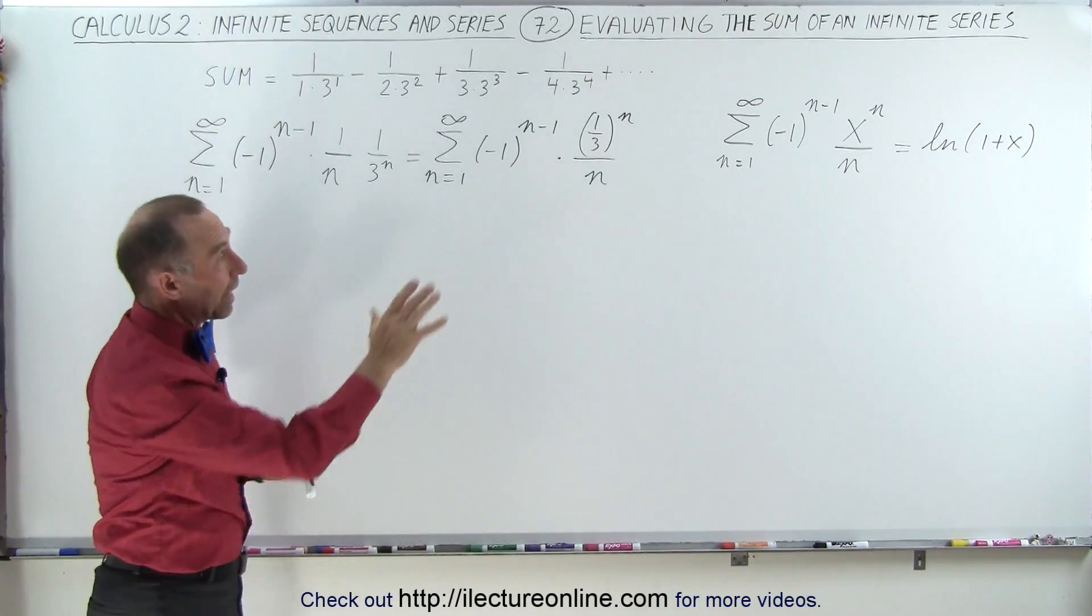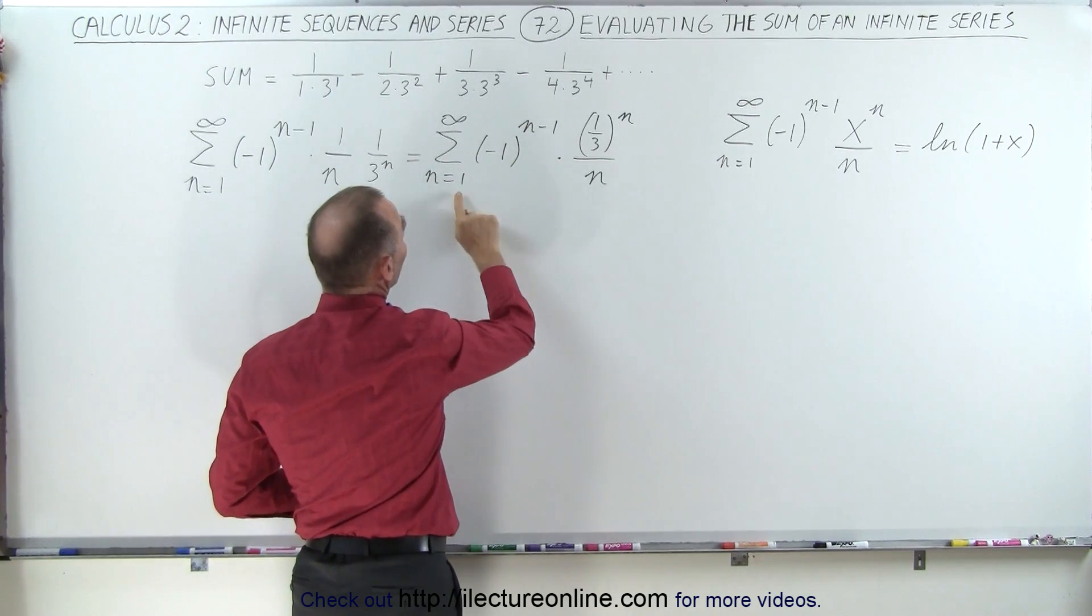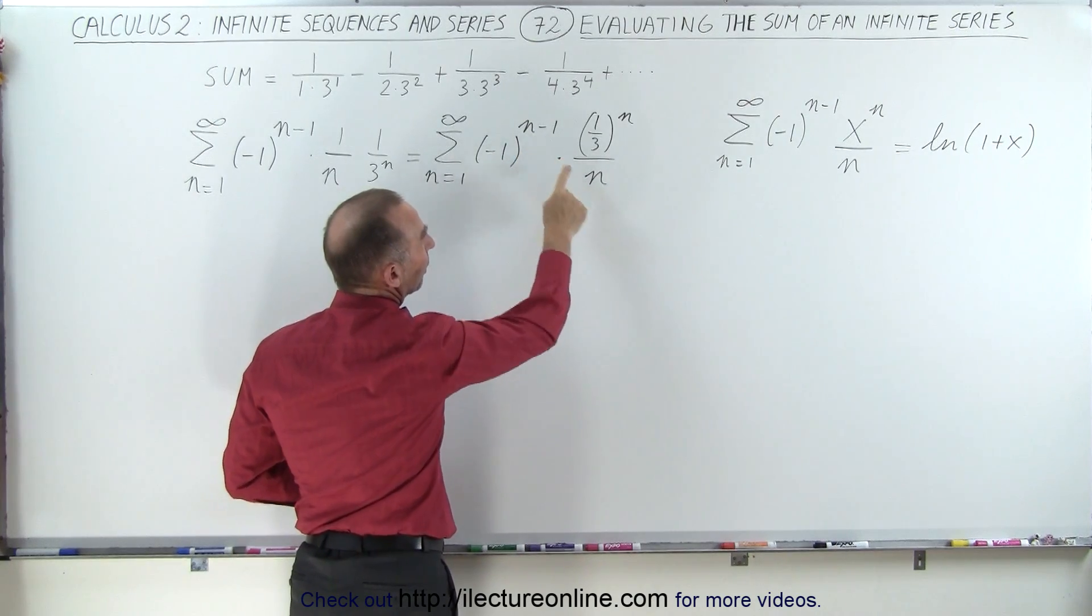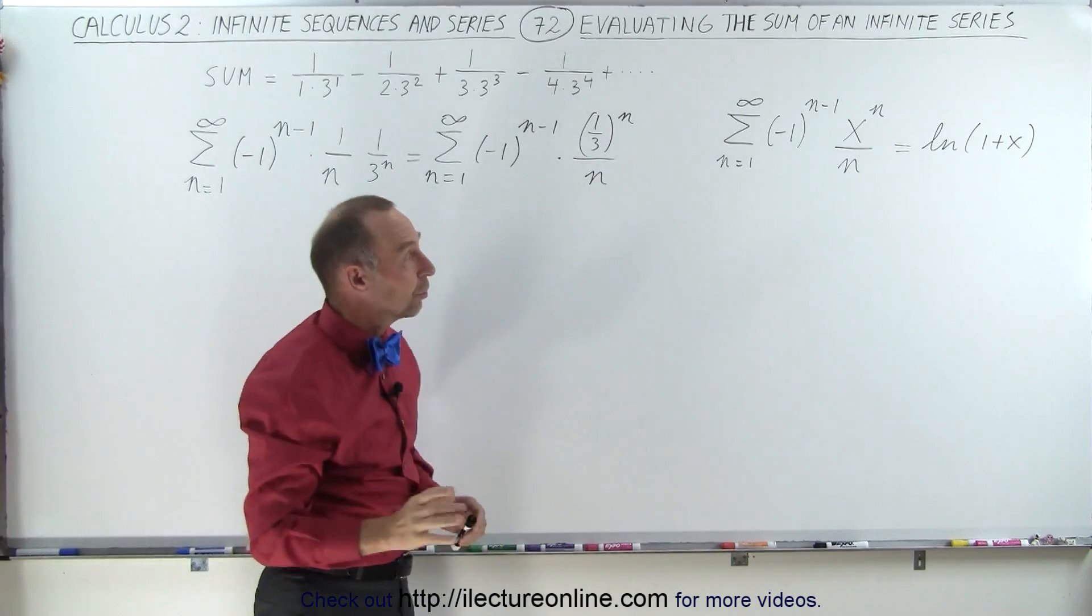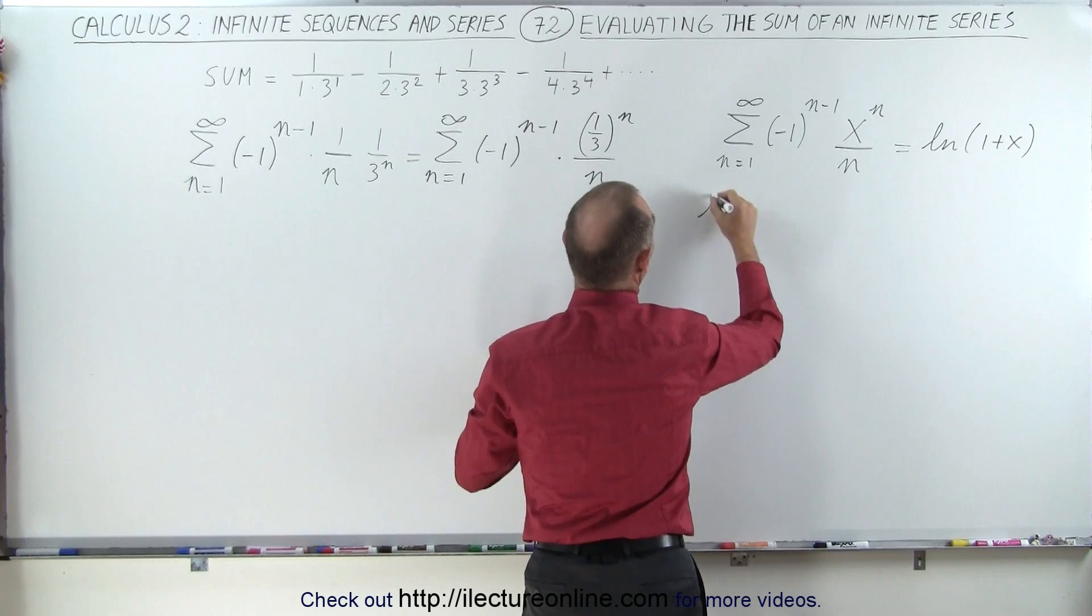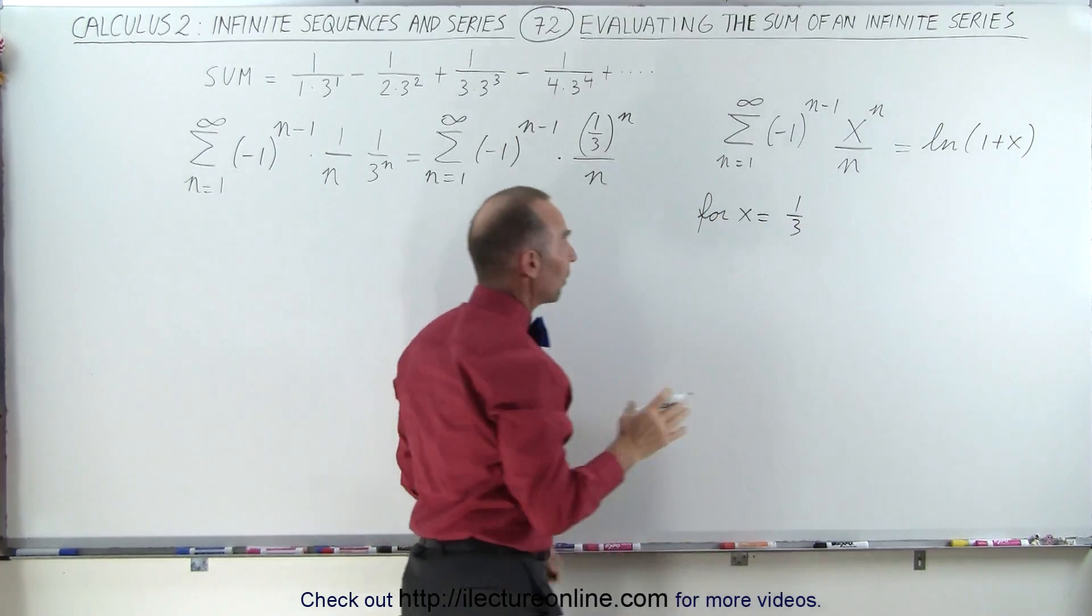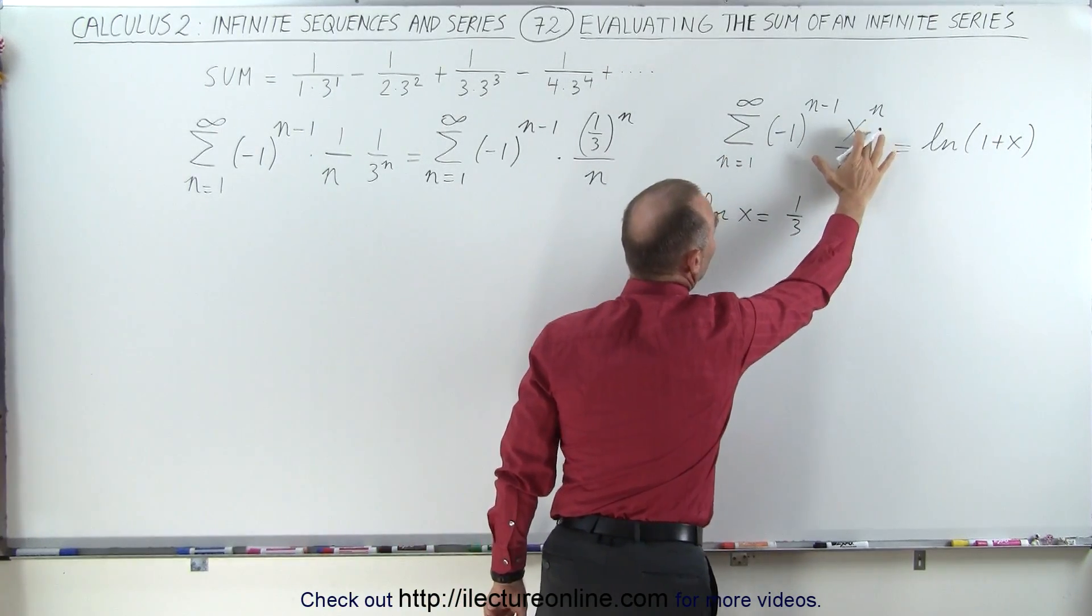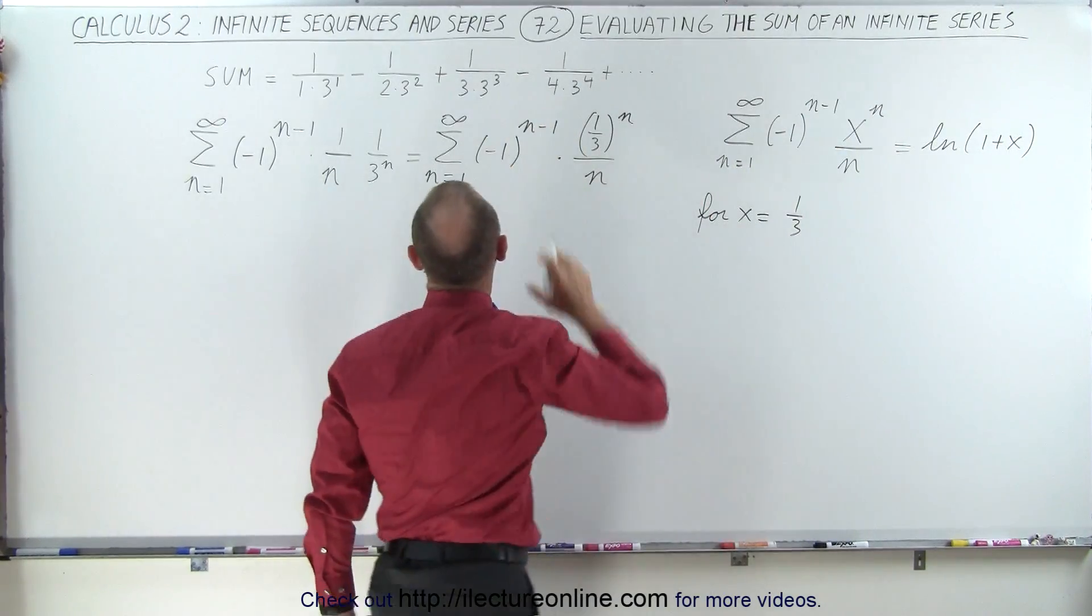So now take a look at what we have over there versus what we have over here. So we have everything the same almost. We have the infinite sum from 1 to infinity of minus 1 to the n minus 1 power divided by n. But instead of x, we have 1 third. In other words, this is equal to this for x being equal to 1 third. So what we have to do then is replace the infinite sum here. We replace x by 1 third, which means we replace x by 1 third here. And we get the same thing that we have over here.